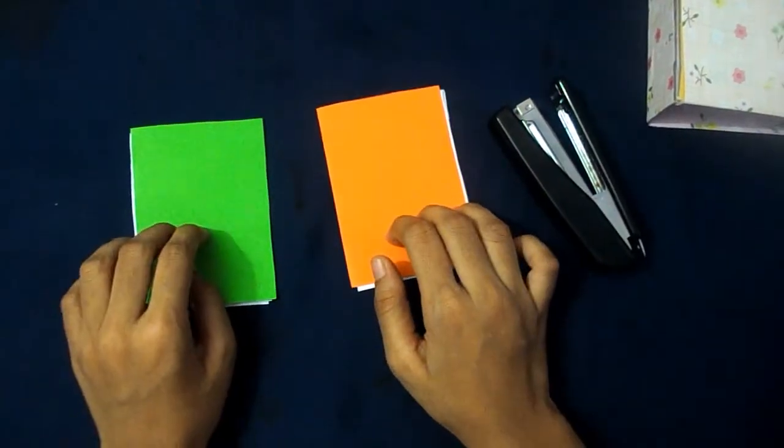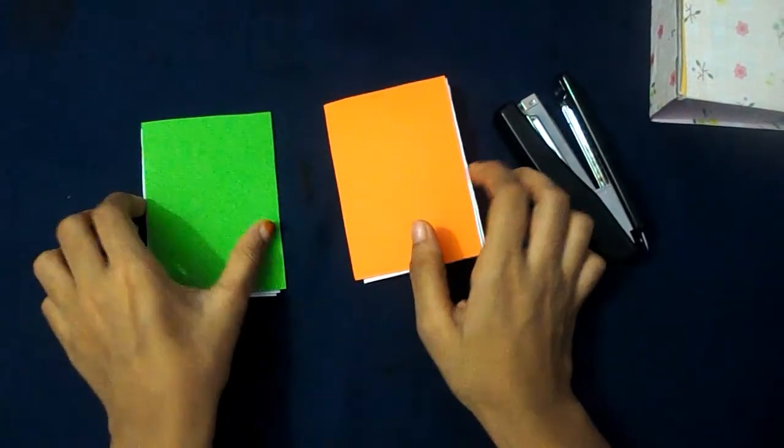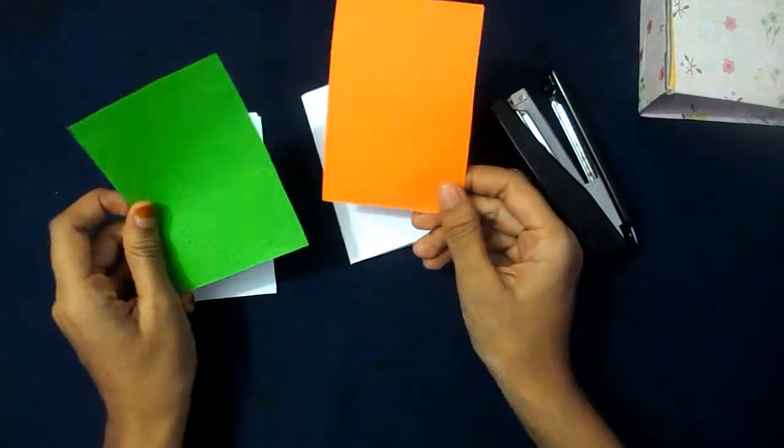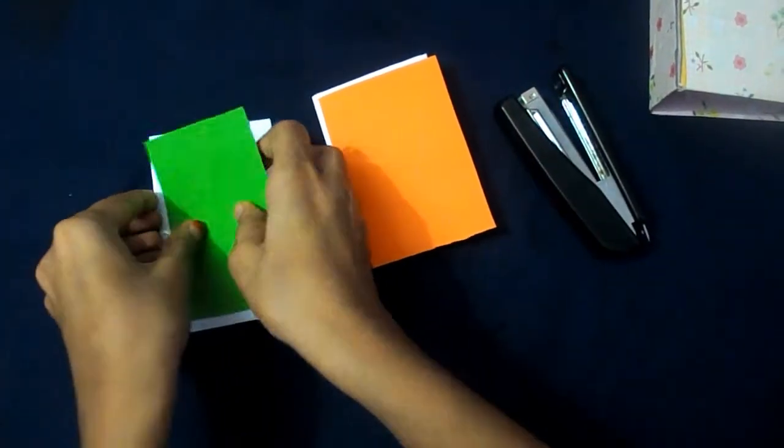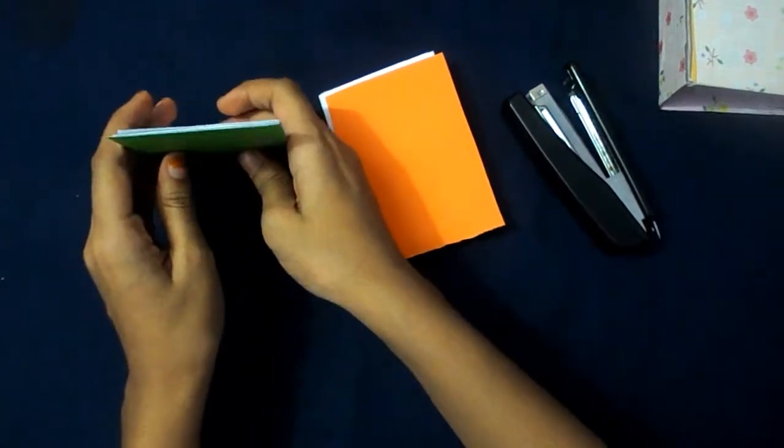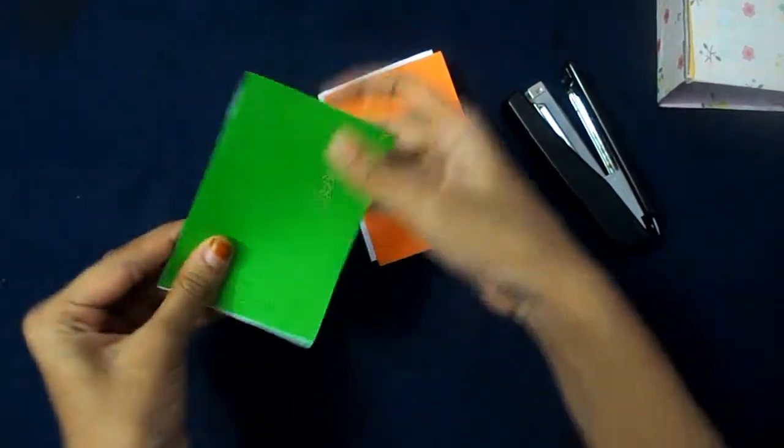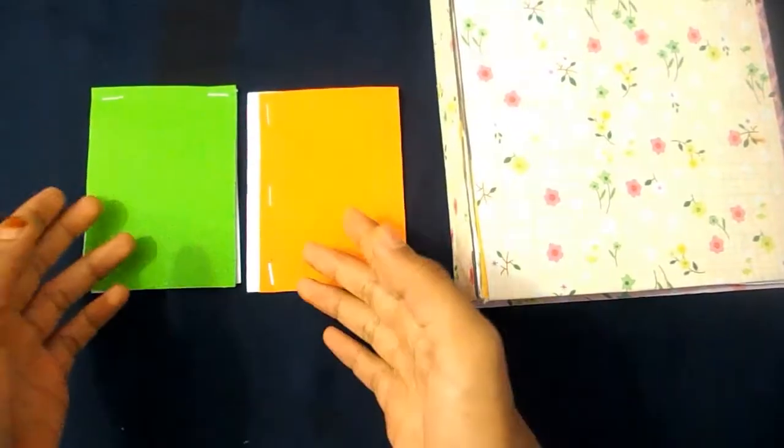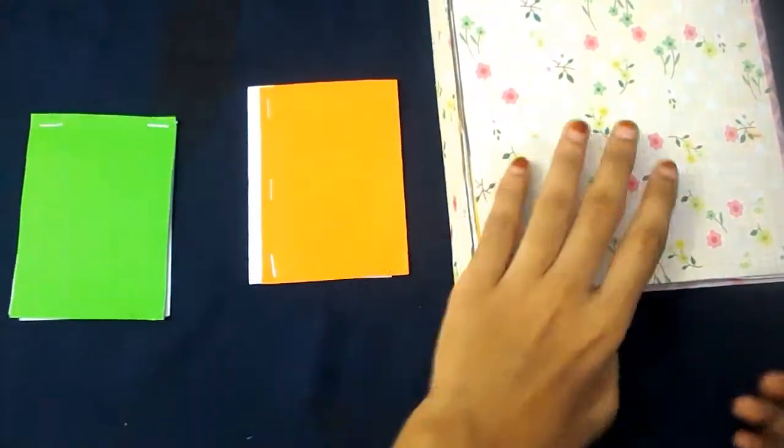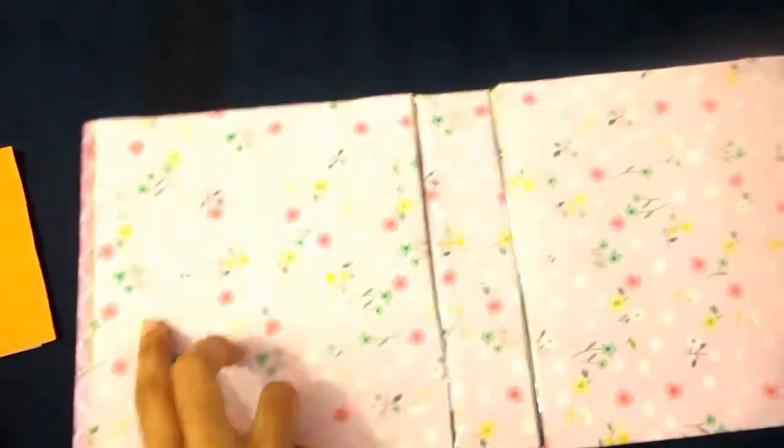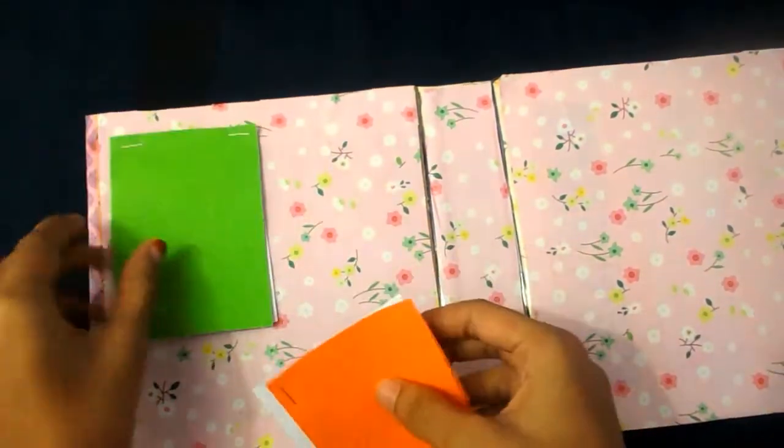I have cut the papers in half, so I will get two books. And also I have cut two colour papers of the size. Now we need to staple these papers together. My books are ready. As you can see I have two books. And now we need to stick these books on the file. So I'm gonna stick my books in this way.